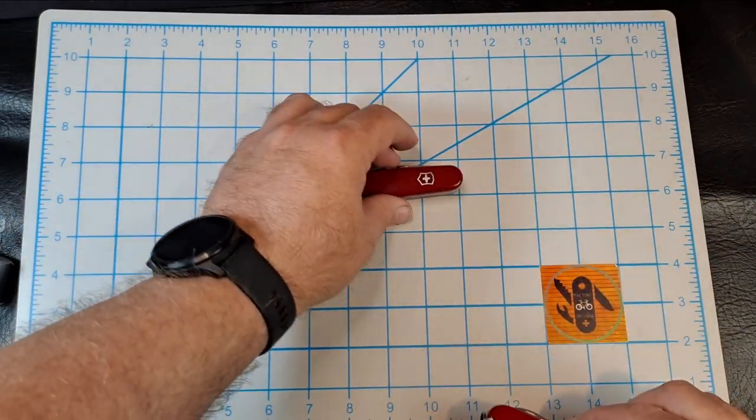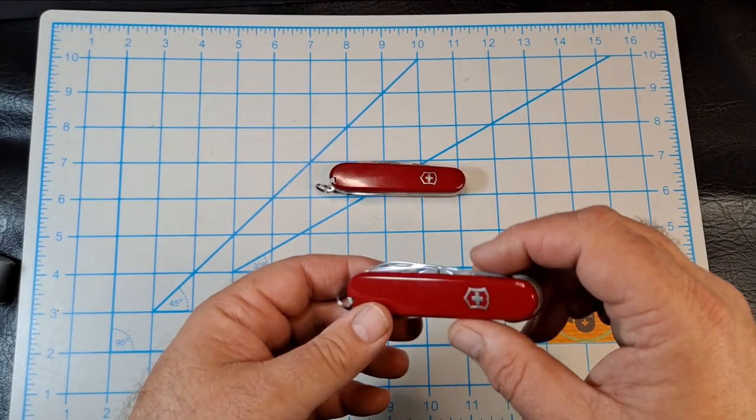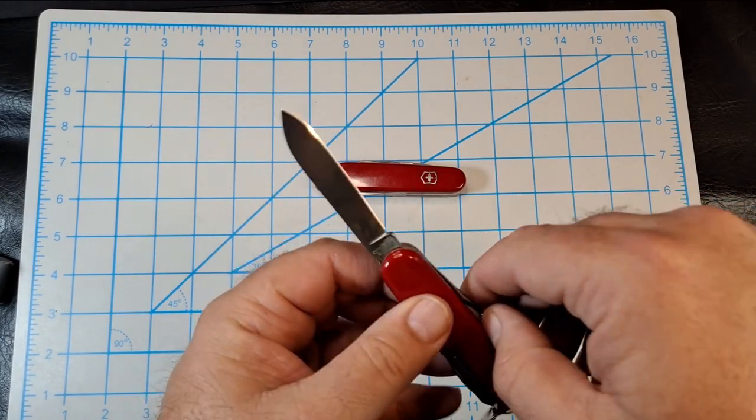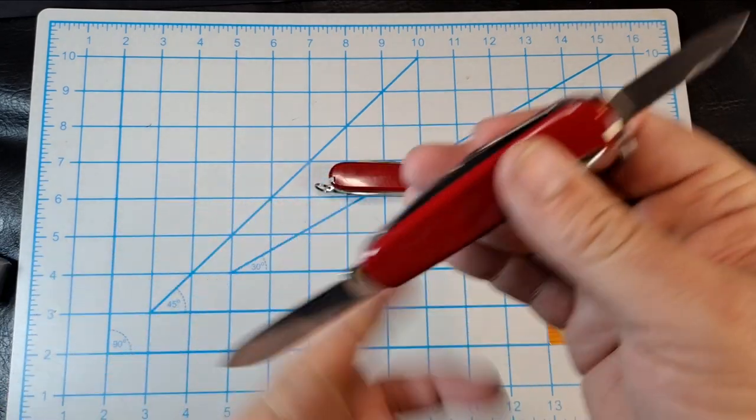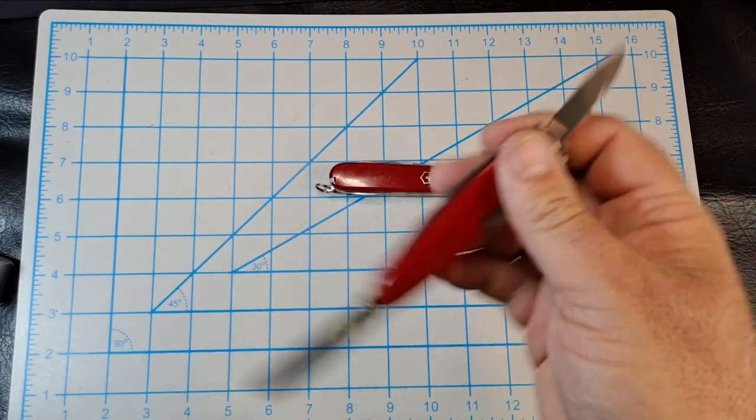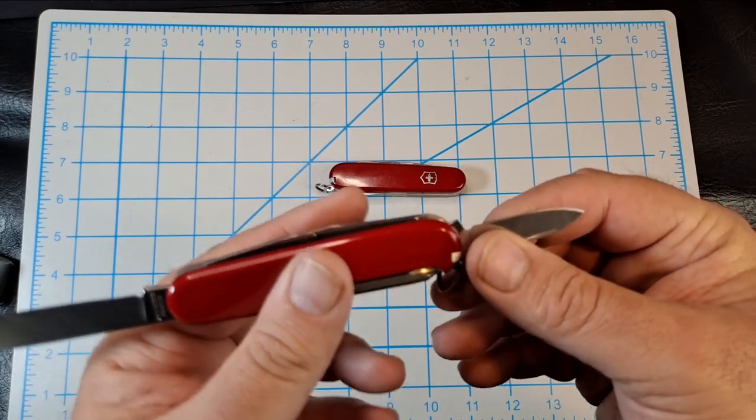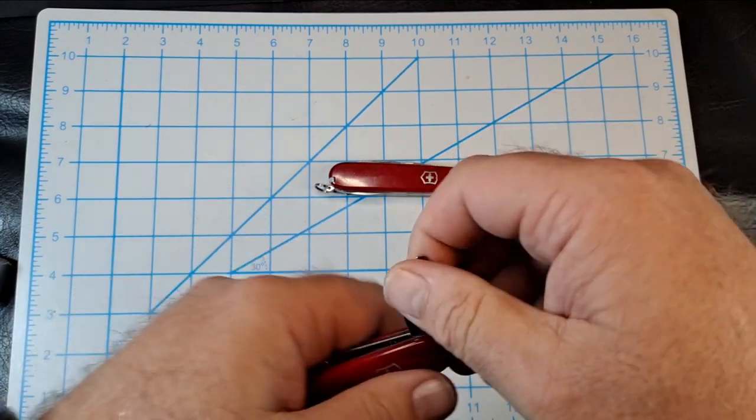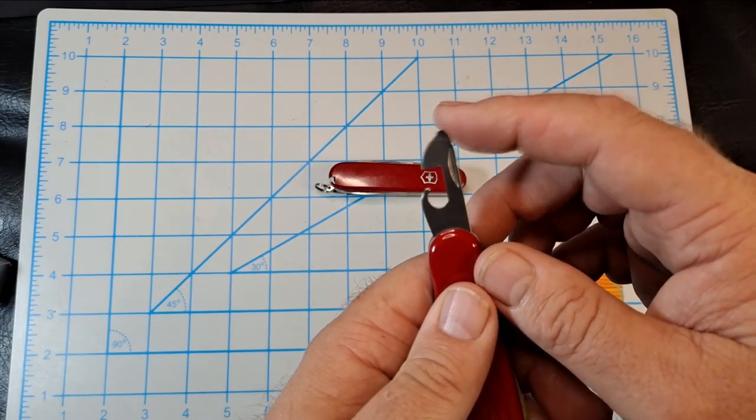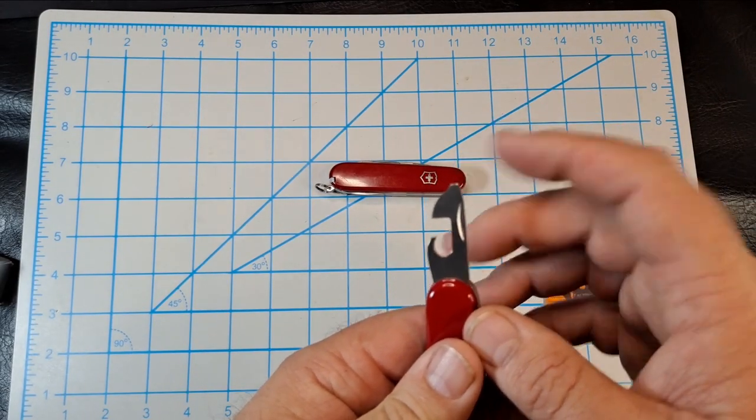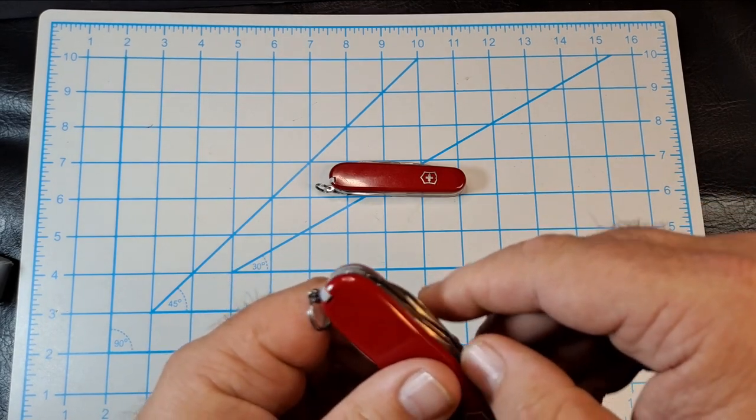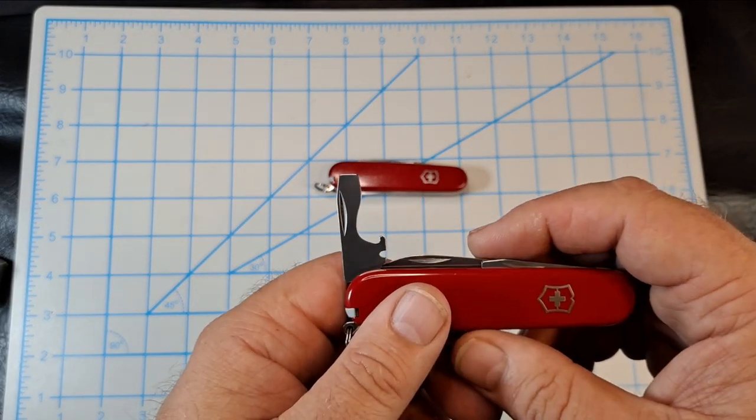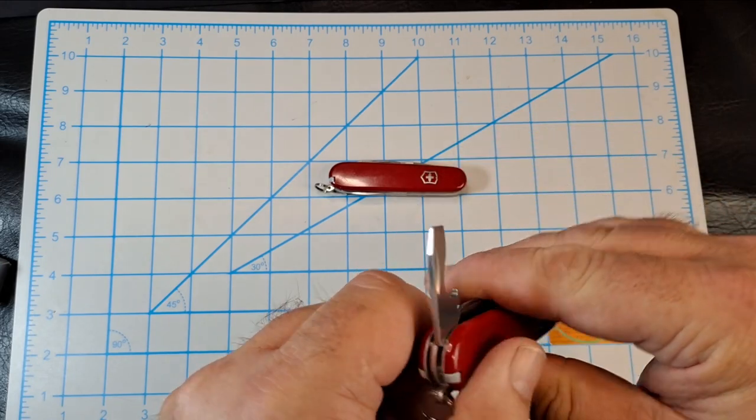The Tinker has the exact same tools as the Hiker minus the saw. Let's check them out real quick. You got your long blade and your little short blade, which I call my pencil sharpener - that's exactly what I use the short one for all the time. On this side you have your can opener with a little three millimeter flathead screwdriver.